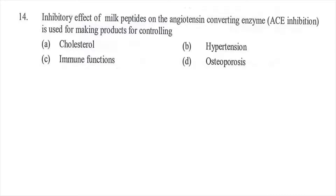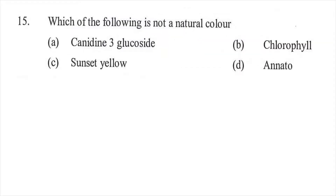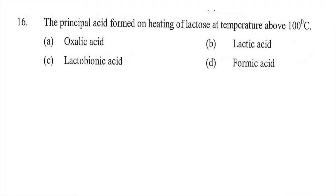Question fourteen: Inhibitory effect of milk peptides on the angiotensin-converting enzyme is used for making products for controlling — option A cholesterol, option B hypertension, option C immune functions, or option D osteoporosis. The right answer is B, hypertension. Question fifteen: Which of the following is not a natural color — option A cyanidin-3-glucoside, option B chlorophyll, option C sunset yellow, or option D annatto? The right answer is C, sunset yellow.